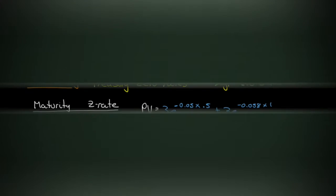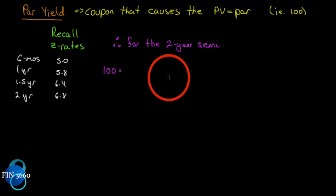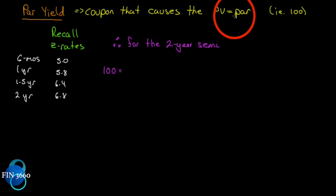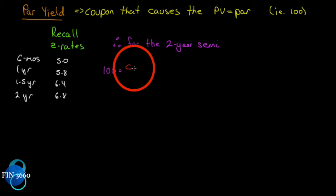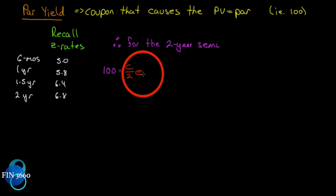Now, par yields. A par yield is the coupon rate that causes the present value of the bond to equal the par value. Since bonds are priced on the 100-point system, PV equals 100. For the two-year semi, instead of PV being 98.39, we set it to 100, and our unknown is the coupon. Since it's semi-annual, the coupon per payment is C over 2.